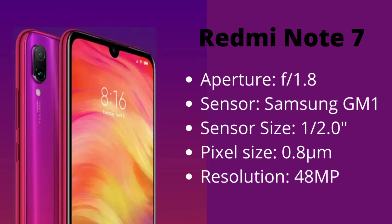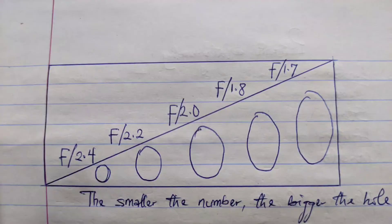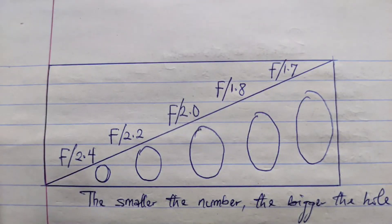The Redmi Note 7 has an aperture size of F/1.8. Now, as I've said consistently, aperture numbers in F-stops are inverse. So an aperture of F/1.8 is actually way bigger than an aperture of F/3.0. The smaller the number, the bigger the hole — the bigger the aperture. So 2.9 is bigger than 3.0, 2.5 is bigger than 3.0, 2.0 is bigger than 2.5, and 1.8 is bigger than all of them.